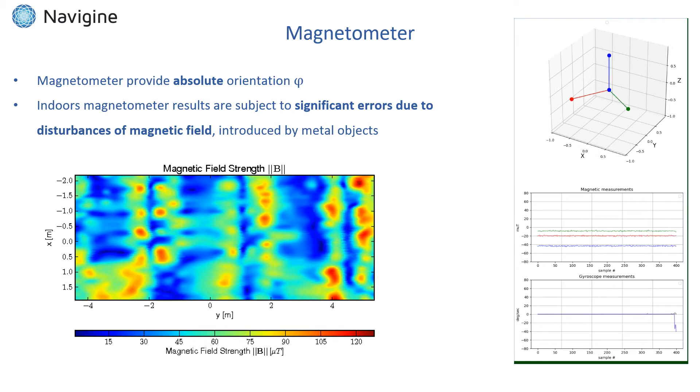Magnetometer, as discussed before, can provide absolute heading even without using additional sensors. However, for indoor navigation applications this approach has some significant drawbacks since magnetometer readings are subject to disturbances introduced by metal objects.